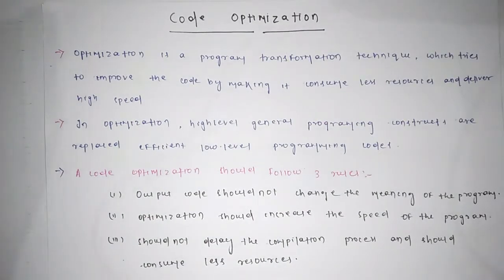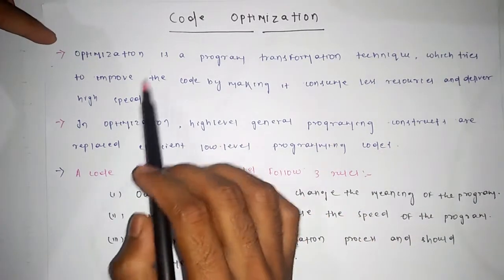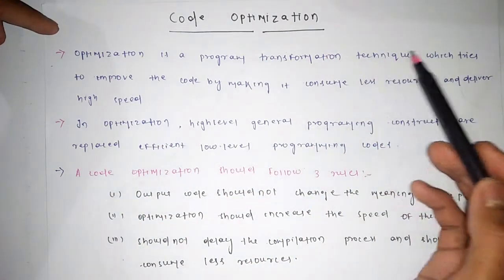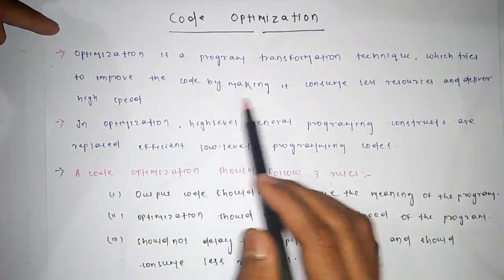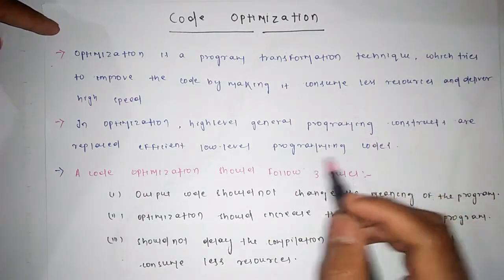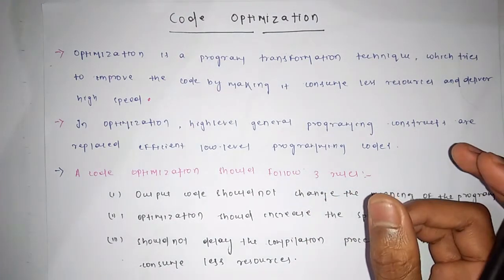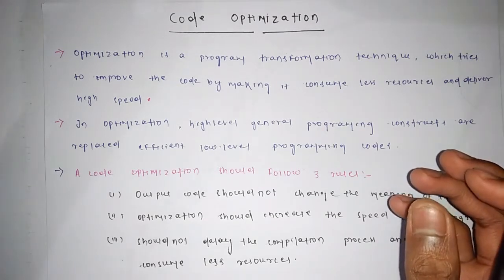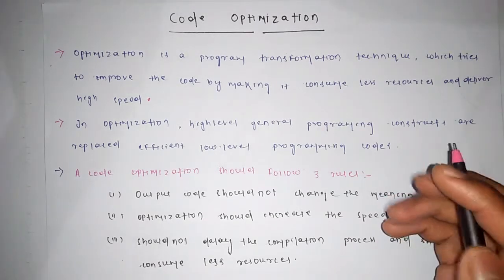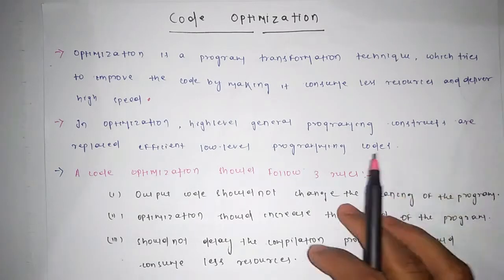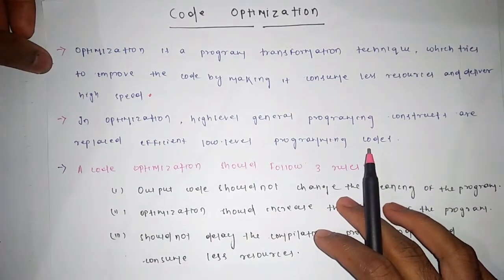Welcome friends to my channel. Stay focused — today we are going to see another phase of compiler design, that is code optimization. So according to the definition, optimization is a program transformation technique which tries to improve the code by making it consume less resources and deliver high speed.